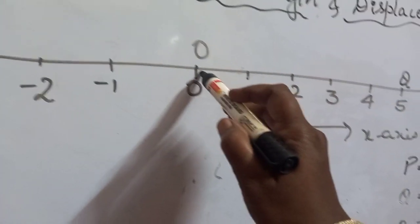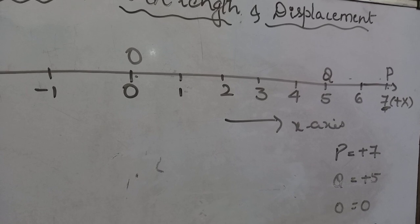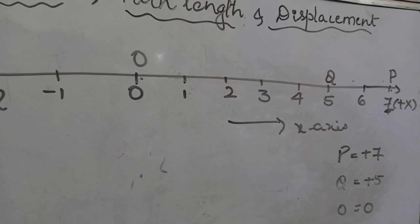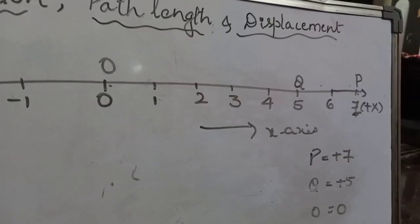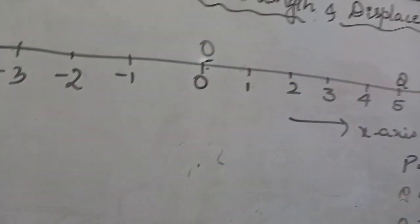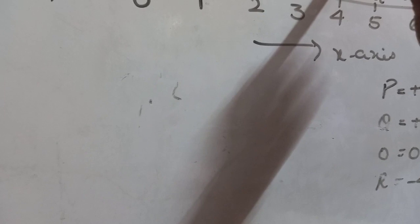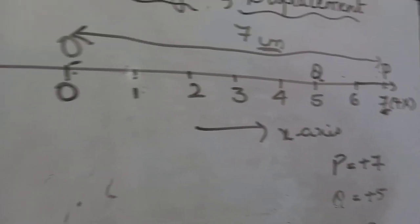When an object moves from O to P, how much distance has it moved from point O? That distance is taken as the path length — the distance moved by the object from one position to another position is called the path length. From O, if the particle moves to P, that is 7 centimeters on the number line.